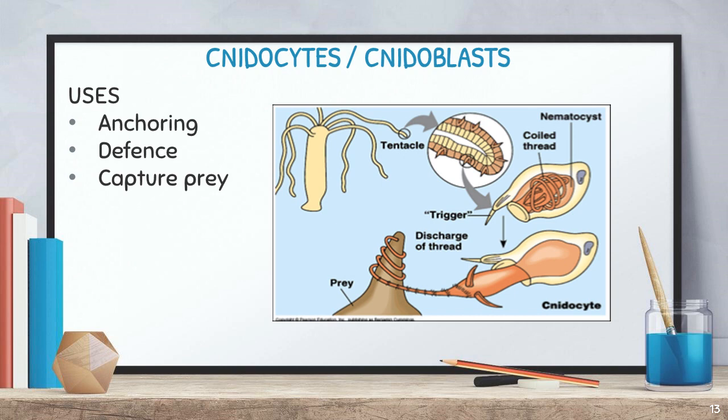A very specific character of Cnidaria is nidocytes or cnidoblasts — specialized cells found in the tentacles. These cells contain a coiled thread called nematocyst with a trigger. When prey is encountered, the coiled thread uncoils to capture prey. The cells can also inject poisonous substances for defense against enemies, and they function in anchoring the organism.